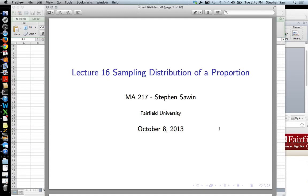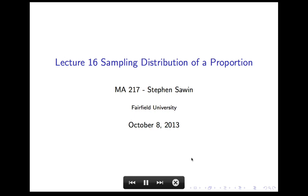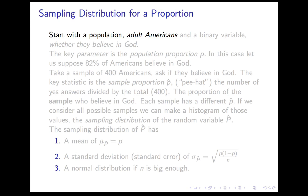This is Lecture 16 on the sampling distribution of a proportion. I'll remind you that in Lecture 1 and the lectures that followed, we talked about populations, variables — a question you could ask about each individual — and parameters that summarize those, like the average and proportion. Then we talked about samples you could take from the population, and statistics, which summarized the same variables in the sample instead of the population. We went into great depth about these, but then we switched to probability and started talking about random variables.